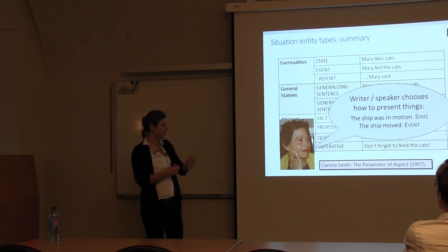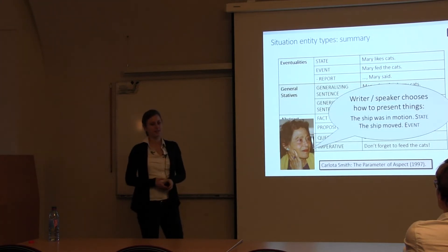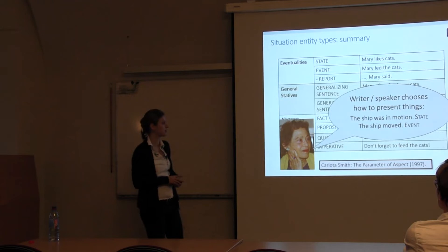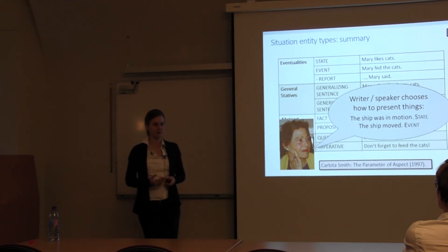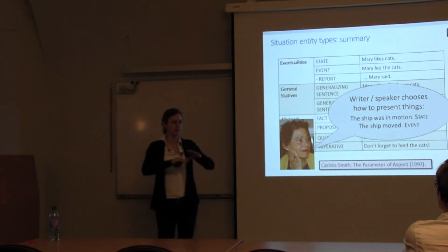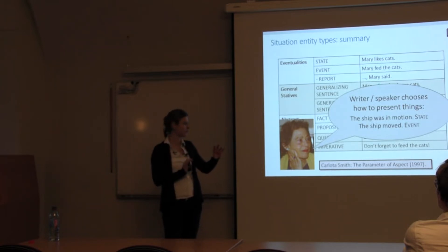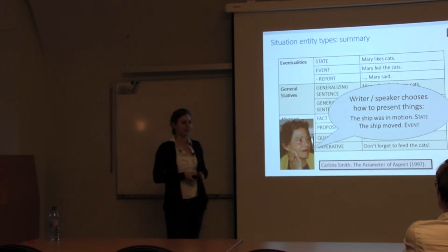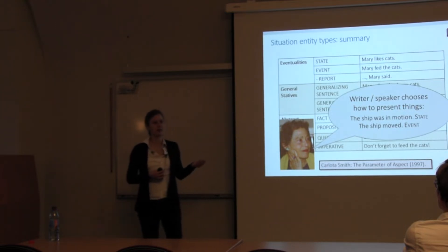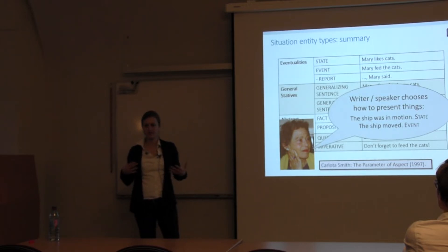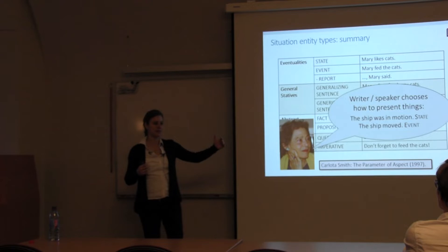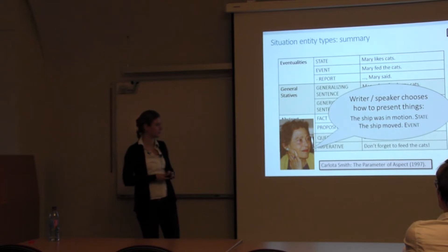Situation entity types reflect how the writer or speaker chooses to represent things, not necessarily the underlying semantics. The textbook example: 'The ship was in motion' represents a state while 'The ship moved' is an event, but in the real world the same thing probably happened. This makes the study more relevant for temporal inference, genre, or literary studies — understanding representation rather than modeling world semantics.